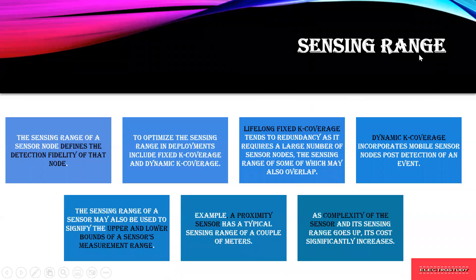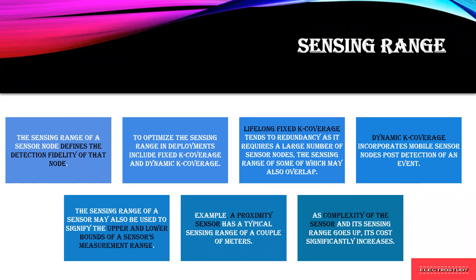Sensing range — what is the range? For sensing something, you have to set a range. The sensing range of a sensor node defines the detection fidelity of that node: how much it can detect, and how far. For example, with a proximity sensor, how far can the sensor detect? Or with a temperature sensor, up to what temperature can it detect? It defines the detection fidelity of the node.